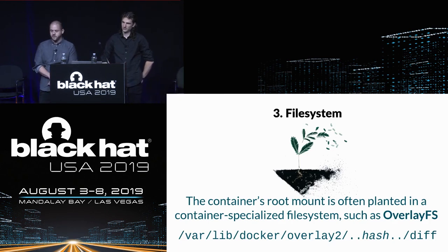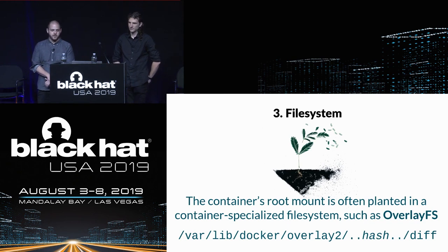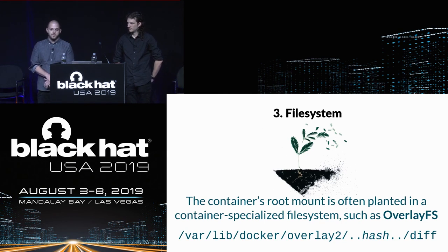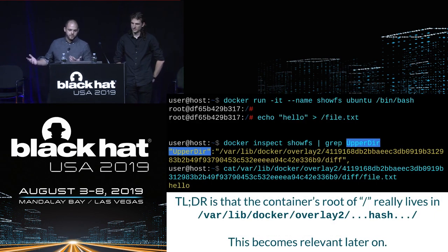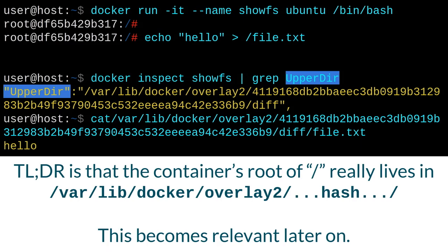The container's root file system is another property which sets it apart from other tasks. The container's root is often placed in a special file system mount. Modern Docker uses OverlayFS, which supports management of layers so that modified data does not actually affect the underlying container image. Any modifications made on OverlayFS are stored in a diff directory. The container's root mount is a path reachable from the host file system, available through the OverlayFS upper directory — and this becomes important when talking about container escapes.